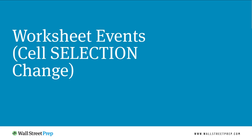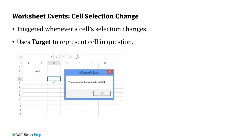The SelectionChange event works pretty much the same way — it's triggered whenever a cell's selection changes. You don't actually have to change the value of the cell; you just have to switch it. You can use your arrow keys, click with your mouse, or whatever. This event again uses 'target' to represent the cell in question.